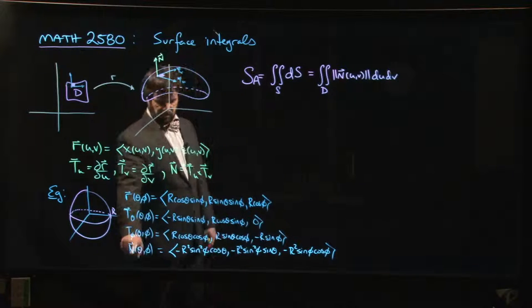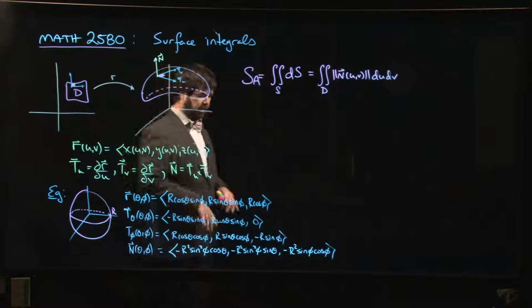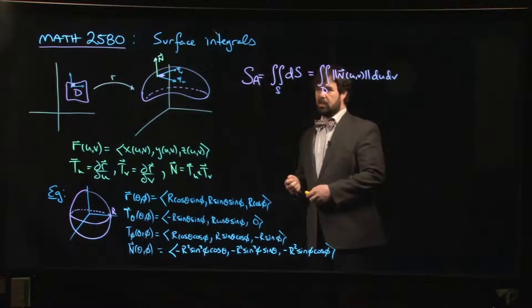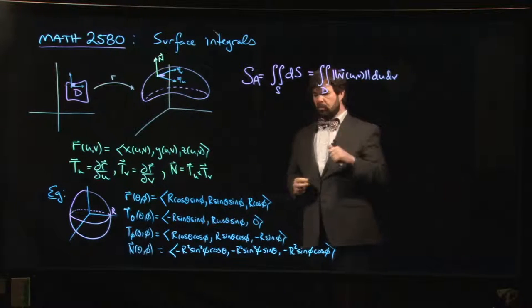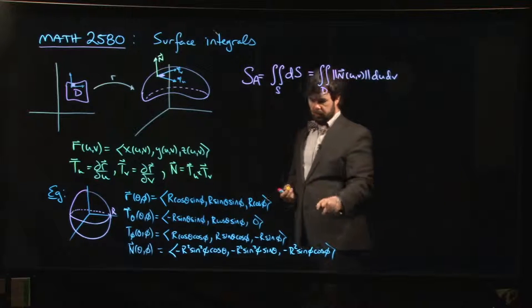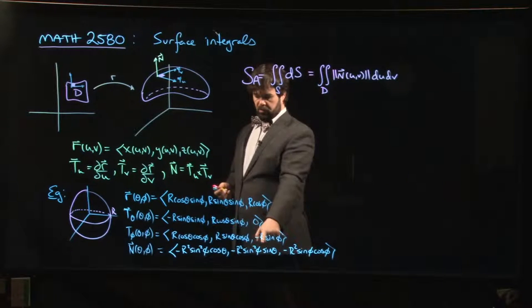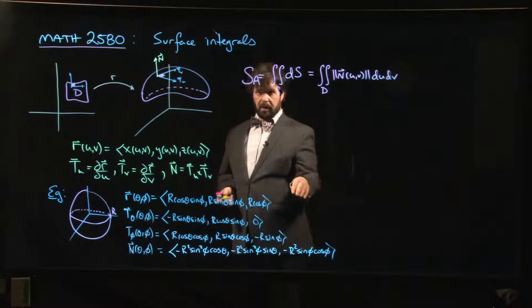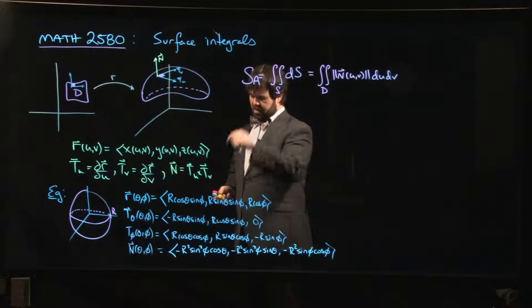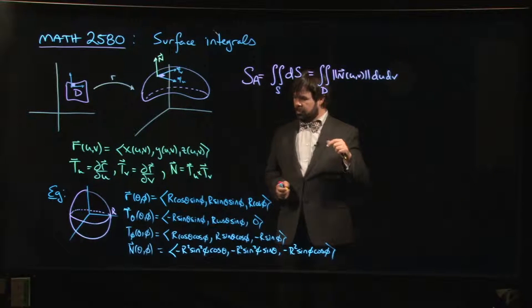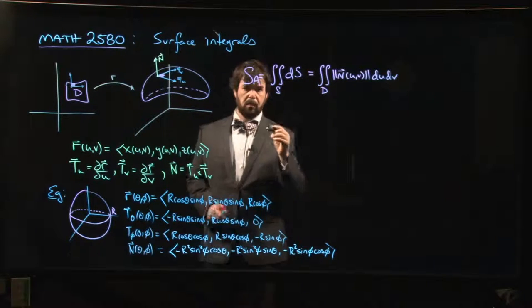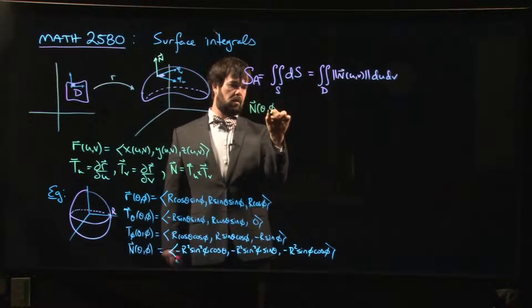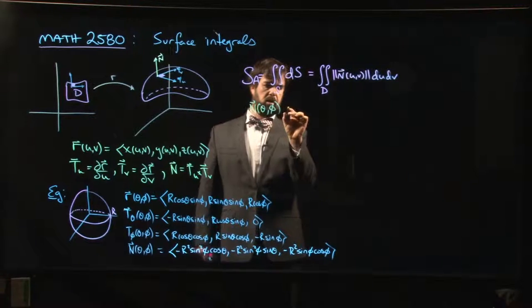So we can compute the tangent vectors, calculate the cross product, we get the normal vector. I did that ahead of time just to save us some time on the details. There's a common scalar multiple you can pull out.